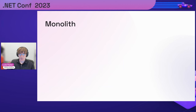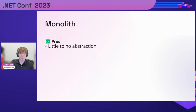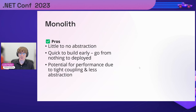This is what we call the monolith. There are some pros to this: there's little to no abstraction, it's very quick to build since you just write code and get it up and running. There's potential — keyword: potential — for performance. Abstraction comes at a cost in CPU cycles and things like that; however, if you need that performance, it is possible here.